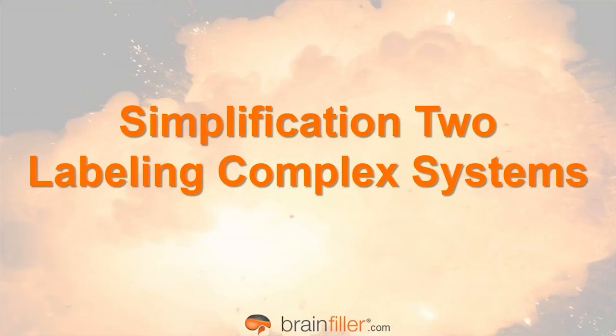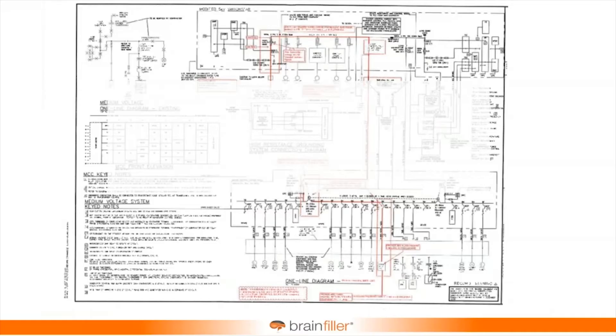Another labeling strategy — and this is actually brand new for the 2018 edition of NFPA 70E — is labeling complex systems. By complex systems, what I'm referring to is if you perform an arc flash study, use the software and perform calculations, you look at a more complex single line drawing.